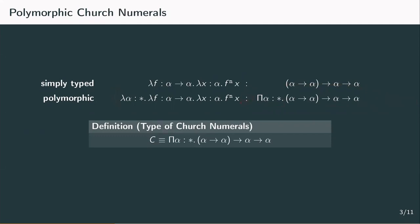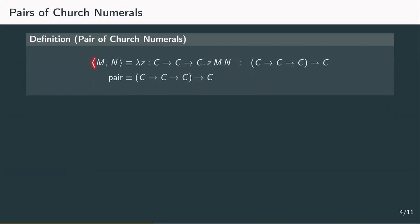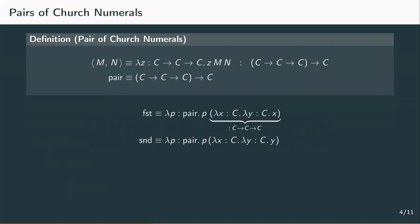Before we can get to the definition of primitive recursion, we need to introduce a new construct: pairs. A pair of church numerals is denoted in infix notation with angle brackets around terms m and n. It is defined as a lambda term that takes a term z of type C to C to C and returns z applied to m applied to n. The type of a pair is therefore C to C to C to C, which we abbreviate as 'pair'. The term 'first' takes a pair p and applies it to lambda x lambda y dot x, and 'second' applies p to lambda x lambda y dot y.